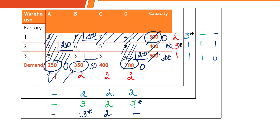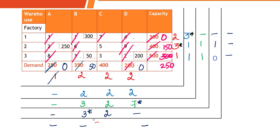Next iteration: remaining demand is 50 for warehouse B. Column B penalty: 6 and 5 as least, difference = 1. Column C penalty: 3 and 3 gives 0. The maximum penalty is 3 from Column B. Minimum cost is 3, so allocate 50 — the demand here. Capacity of Factory 3 becomes 300 minus 50 = 250. Warehouse B is now exhausted.